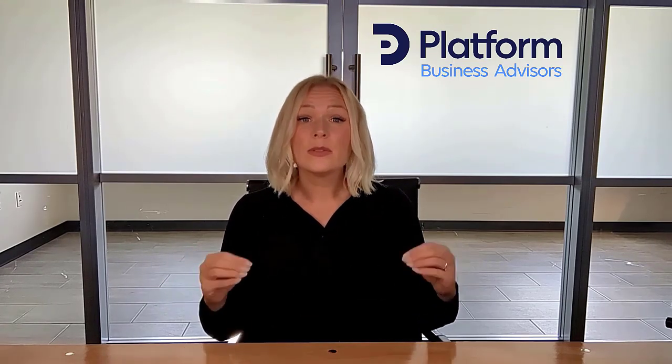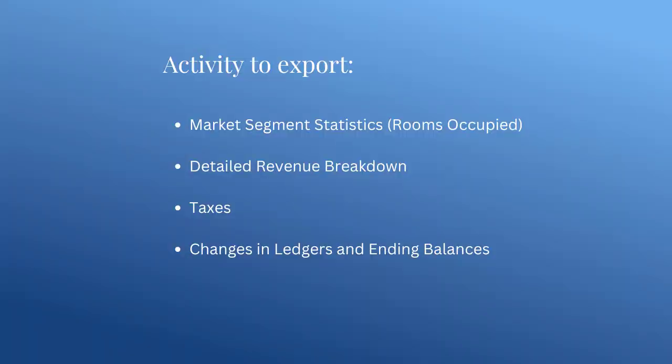You need to know who owes you money. It's vital that your PMS can export all of your activity — market stats, revenue, taxes, changes in ledgers — to your back office accounting system. This makes sure your profit and loss statements are accurate. Your PMS should allow for both manual export and automatic import of data. This dual capability ensures nothing gets overlooked and your bottom line becomes a whole lot easier.